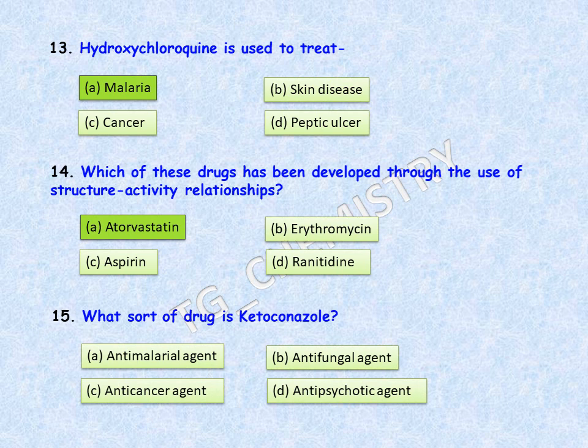Next question: what sort of drug is ketoconazole? Options are: A, an anti-malarial agent; B, an anti-fungal agent; C, an anti-cancer agent; D, an anti-psychotic agent. The correct answer is that ketoconazole is an anti-fungal agent.